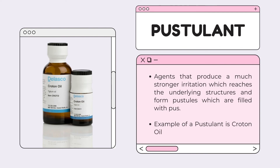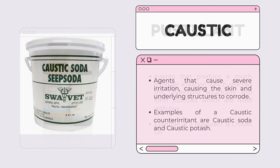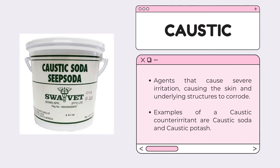Third, we have pustulant. These are agents that produce a much stronger irritation which reaches the underlying structures and forms pustules filled with pus. An example of a pustulant is croton oil. The last classification is caustic. These are agents that cause severe irritation, causing structures to corrode. Examples of caustics are caustic soda and caustic potash.